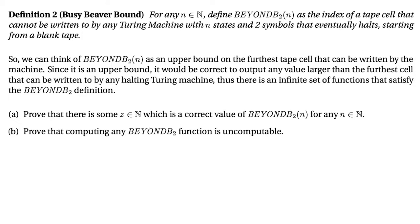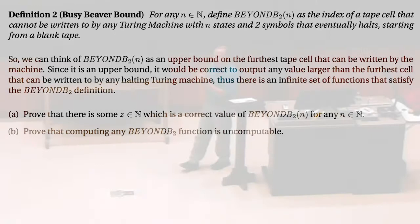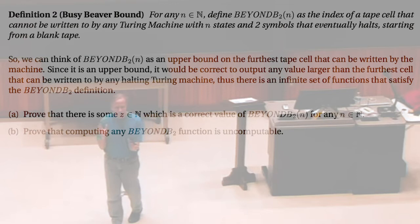But what about this one? Now we're going to define something, and this gets to be a pretty weird thing. You've seen some busy beaver problems, and maybe it's not that surprising that you can't compute the exact value of busy beaver, because that sounds like it's a complicated function. Maybe that's why we can't compute it. So what this is asking is: can you actually compute an upper bound on it?